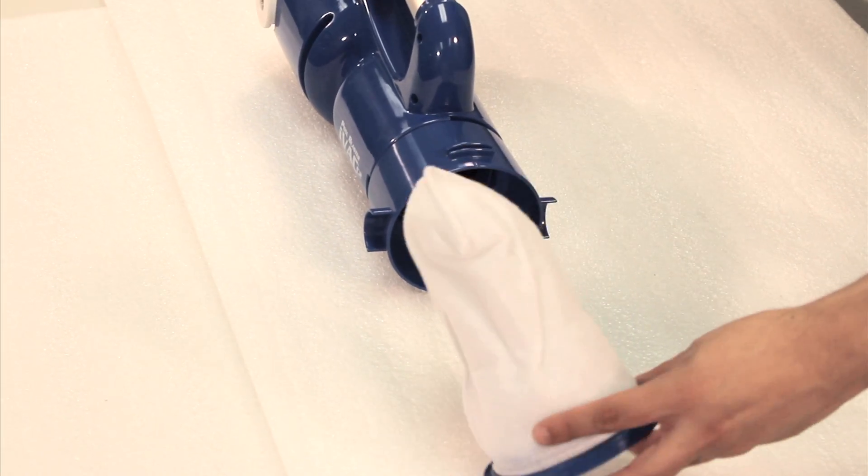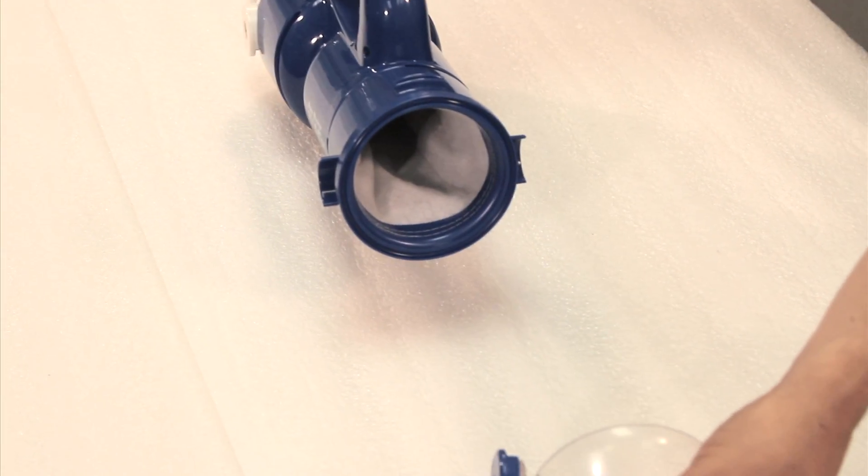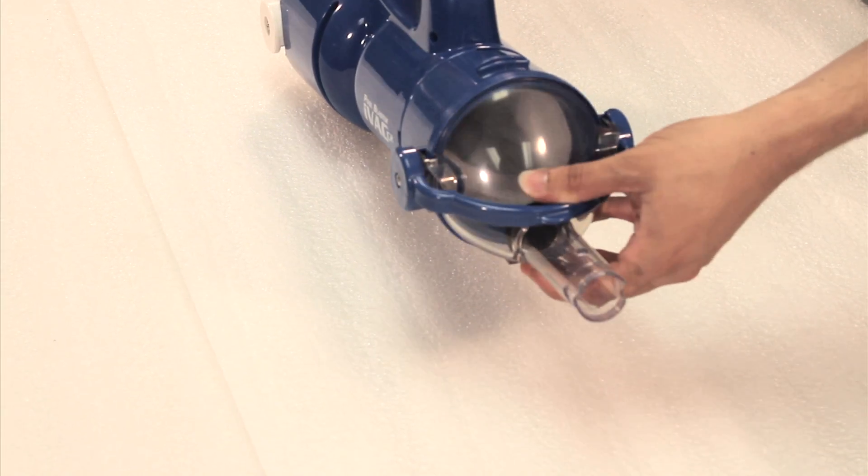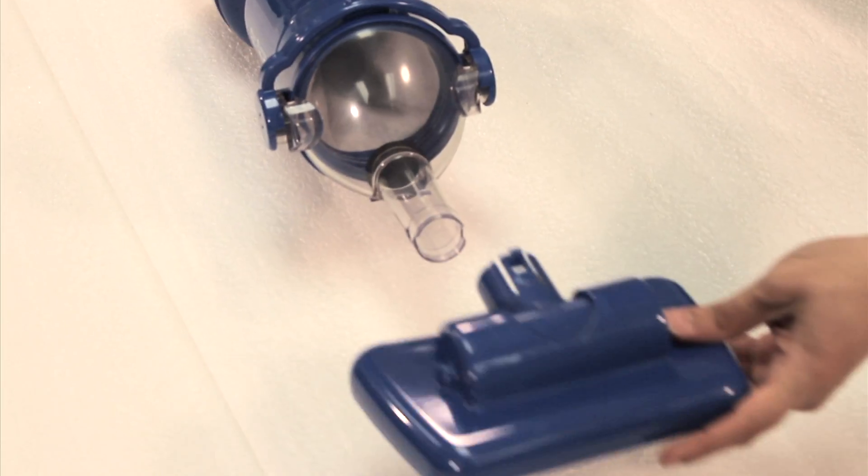First, take the extreme multi-layered filter bag and put it into the debris chamber as shown. Then put the nose cone on and snap the handle down to lock it in place. Then snap the vacuum head onto the nose cone.